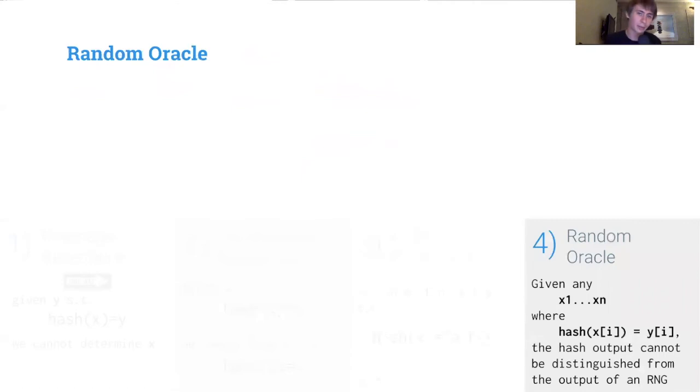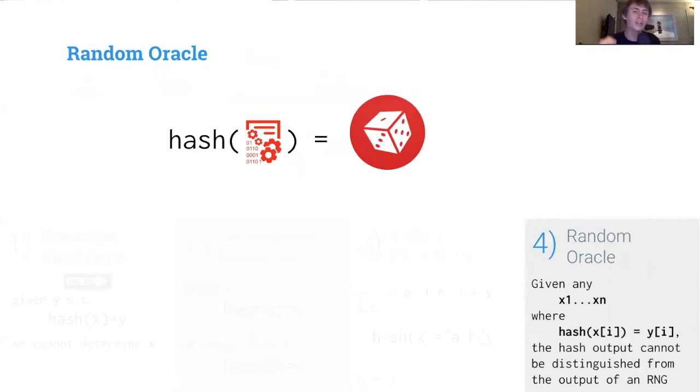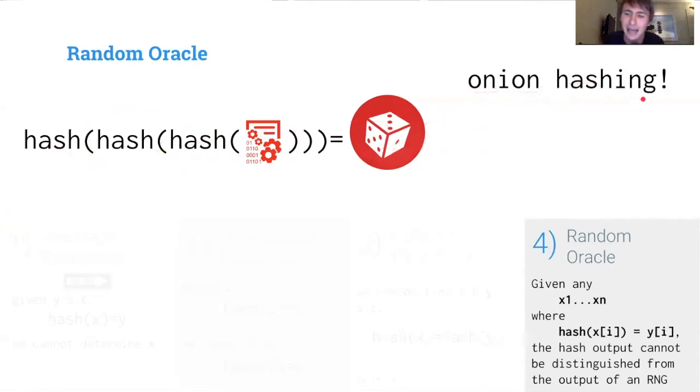The last property is really important - it is the random oracle property. This means that the output of a hash function is identical to a random number, the output of a random number generator. We can use this hash function as a source of randomness. Not only with any arbitrary input, we can even use the hash of our hash as a source of randomness and get a new random number. The hash of our hash of our hash of this file gives us a new random number. This is actually called onion hashing and it's something we're going to go over in later sections.